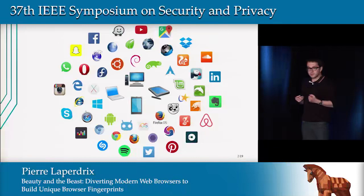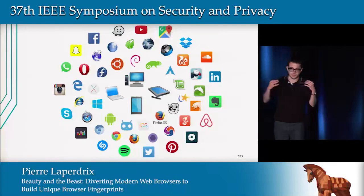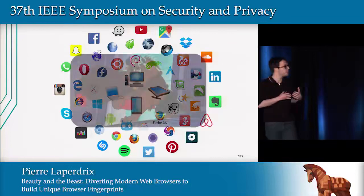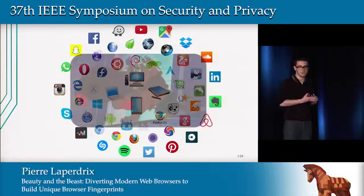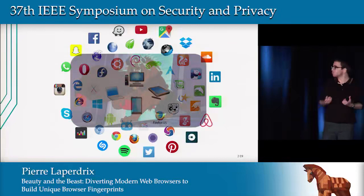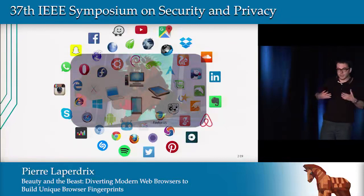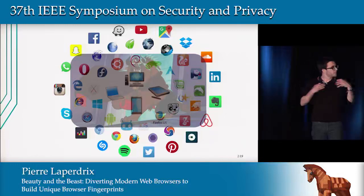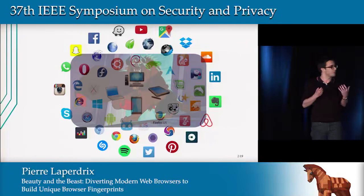The problem is with all these device-specific pieces of information that one can collect, we have what we call — in contrast to the beautiful part of the internet — the beast. It's all the hidden trackers on the internet that collect as much information as possible about your device, and they use that to build a unique identifier called a browser fingerprint.